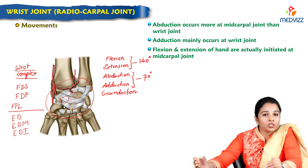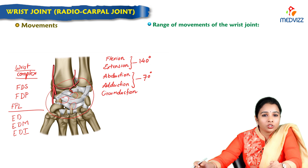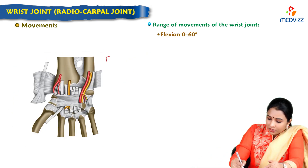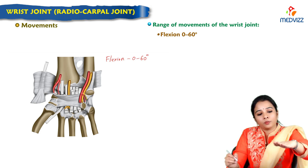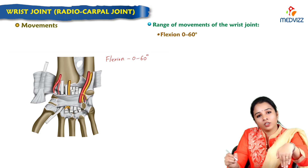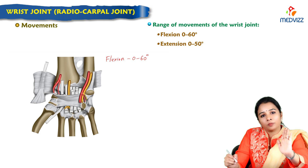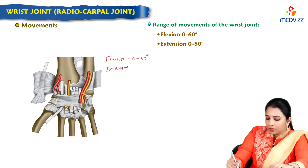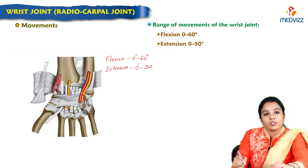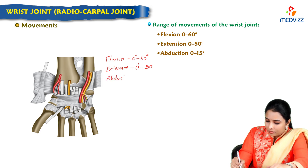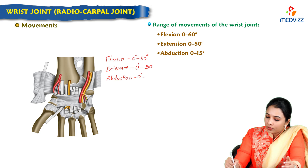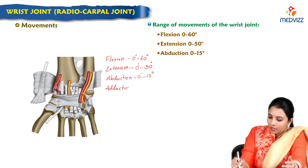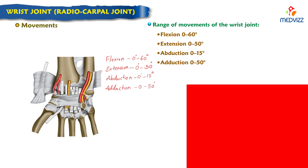Flexion and extension of the hand is actually initiated at the midcarpal joint. Looking at the range of motion for each movement separately: flexion is 0 to 60 degrees from the mid-prone position; extension is 0 to 50 degrees; abduction is 0 to 15 degrees; and adduction is 0 to 15 degrees. This is the range of individual movements at the wrist joint.